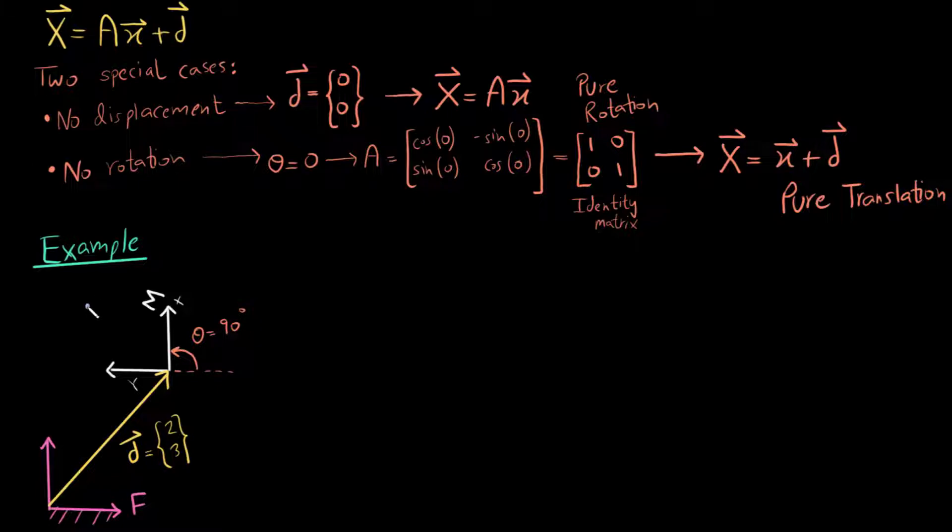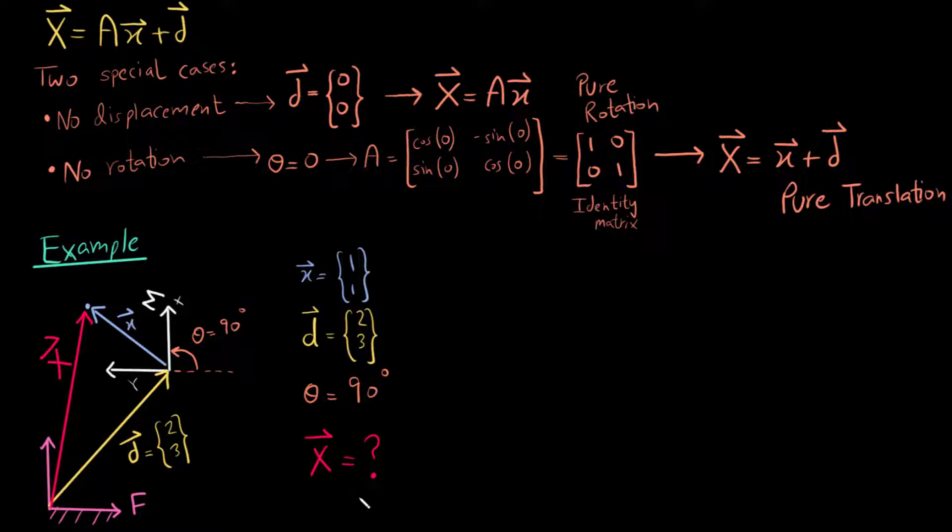And the angle of rotation theta is 90 degrees. And now I mark a point small x which is a point expressed in the moving frame and I need to find big X which is the same point coordinates in the fixed frame. Right here I would encourage you to pause this video for a while and see if you can do this on your own.